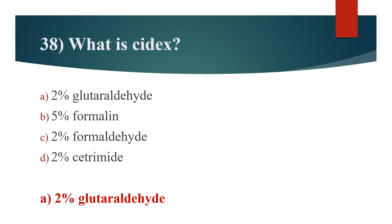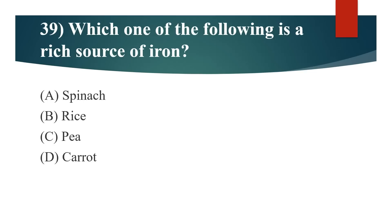39th question: Which one of the following is a rich source of iron? Option A: Spinach. Option B: Rice. Option C: Pea. Option D: Carrot. Answer is Option C: Pea.